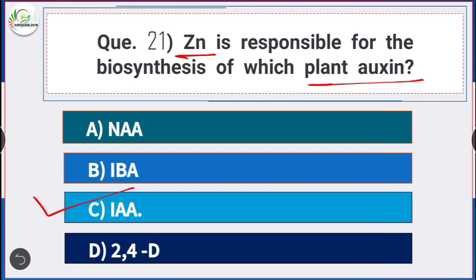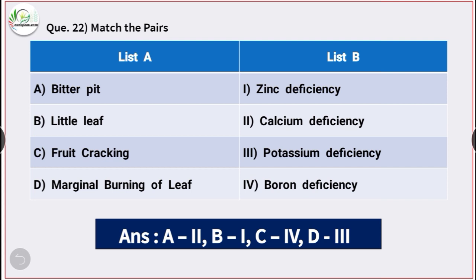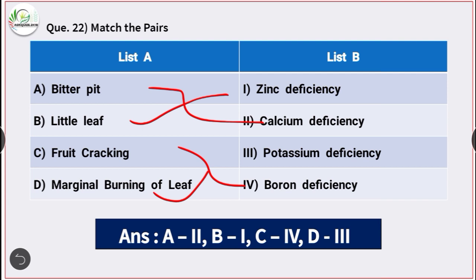Question number 22: Match the following. The correct matches are: bitter pit of apple is caused due to calcium deficiency; little leaf is caused due to zinc deficiency; fruit cracking is caused due to boron deficiency; and marginal burning of leaf is due to potassium deficiency.